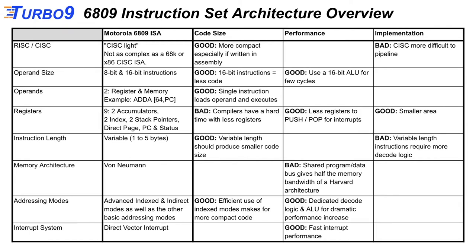The memory architecture is Von Neumann, meaning program and data share the same bus rather than Harvard architecture where you have separate program and data buses. From a performance standpoint, you have half the bandwidth — not much positive to say about that, though it may make your overall design smaller since you don't need two memory buses. For addressing modes, one of the things the 6809 has that's really nice is powerful indexed and indirect addressing modes that are encoded very well, making for more compact code.